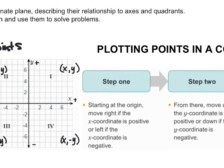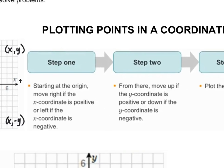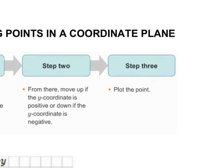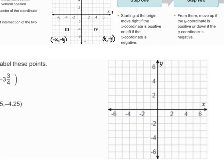Here are the steps to plot a point: start at the origin. Move to the right if your x-coordinate is positive, move left if your x-coordinate is negative. From there, move up if the y-coordinate is positive or down if the y-coordinate is negative. Then step 3, just plot the point. Let's practice that.